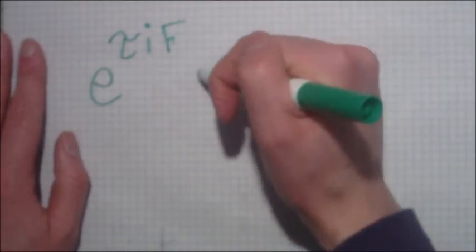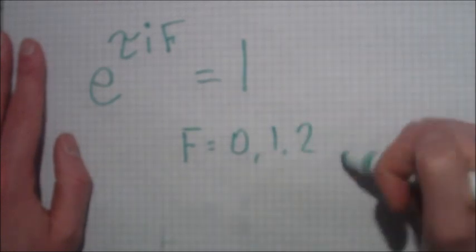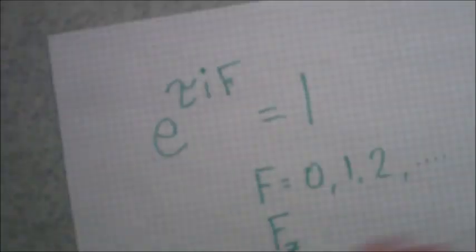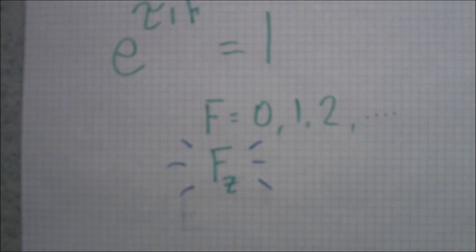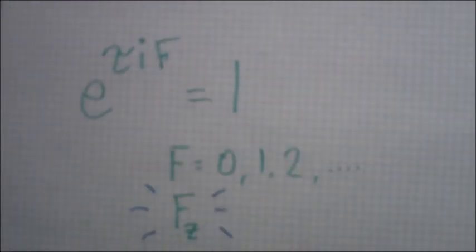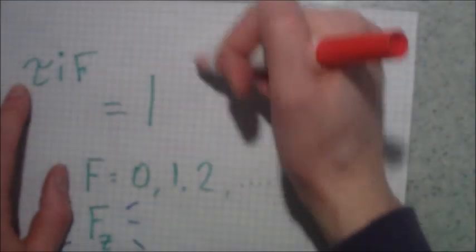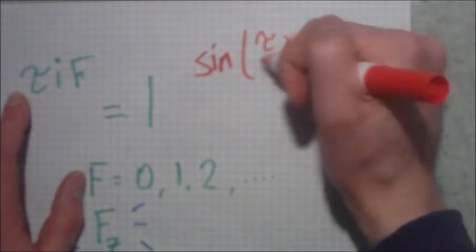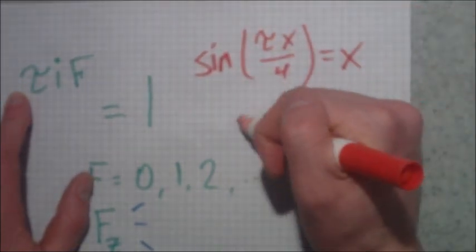And if e to the tau i wow equals one, then wow equals the integers, baby. Yeah. And sine of tau x over four equals x. That's solved by, yep, you guessed it, wow.